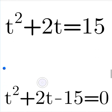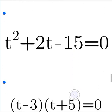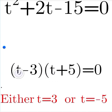Bring the 15 to the left to have it appear like this. You can use factorization or you can use the quadratic formula to solve. Using factorization you shall be having (t-3)(t+5) = 0.